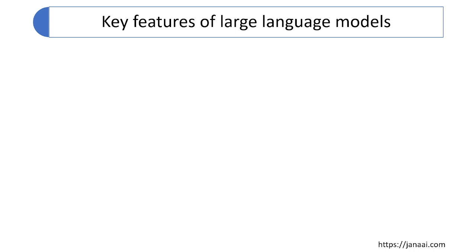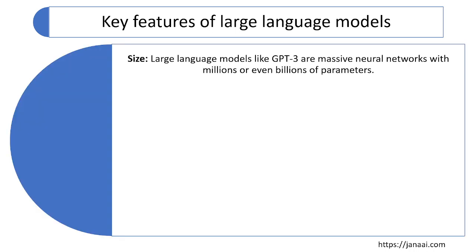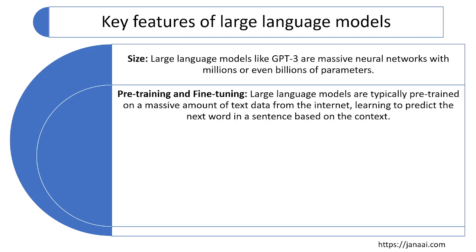Now let's discuss the key features of LLM models. The first main feature is size. LLM models like GPT-3 and LaMDA use massive neural networks with billions of parameters during training. For example, GPT-3 uses 175 billion parameters, and GPT-4 developed by OpenAI uses around 200 billion parameters.